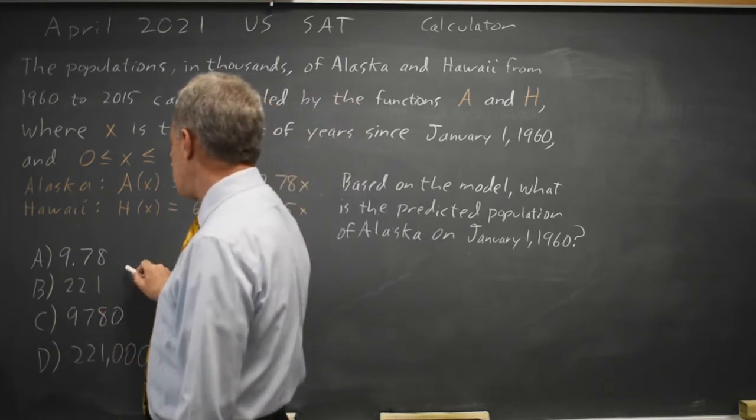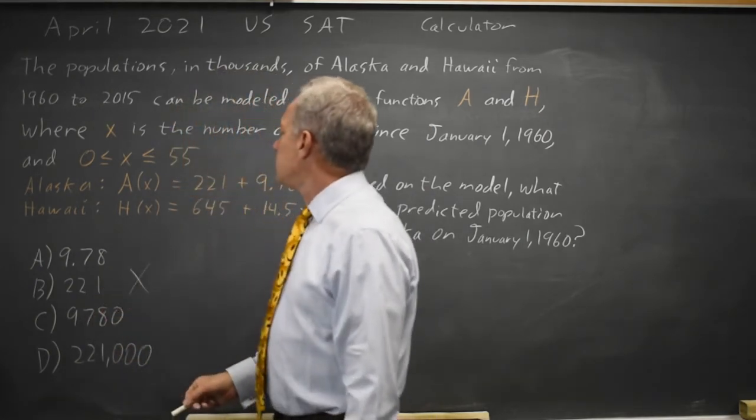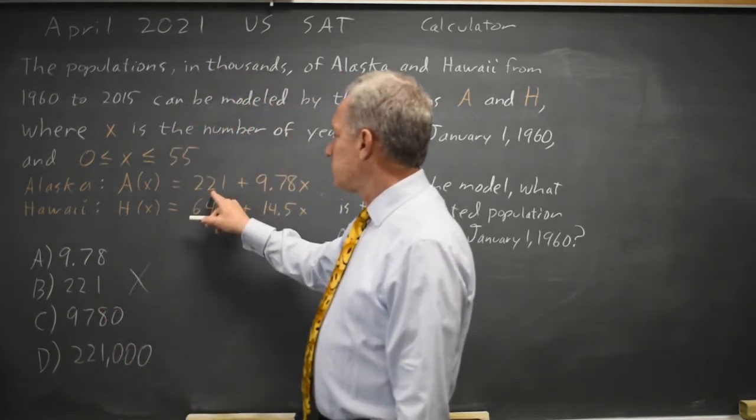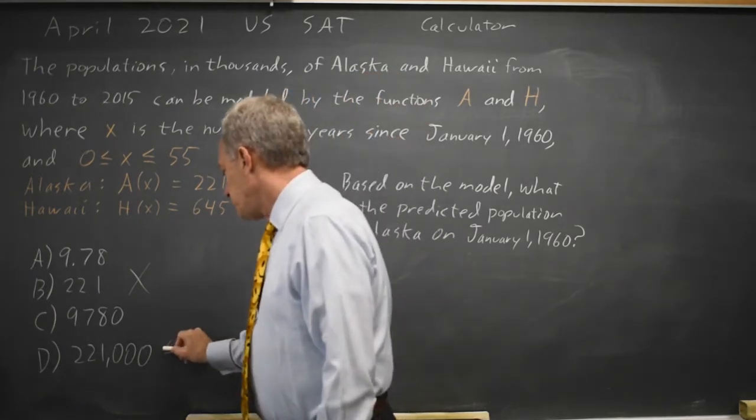So choice B is not correct. At X equals 0, we get 221 thousands, which is choice D.